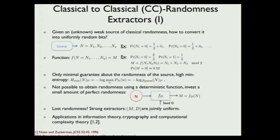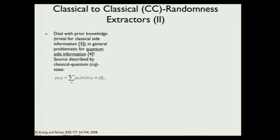From a cryptographic viewpoint, it's an interesting question how to deal with prior knowledge. Imagine a second party has some knowledge about our source — does this randomness extractor still work relative to that party? For classical side information this is no problem at all, but for quantum side information it's not clear. Gawinski et al. give an explicit example of a classical extractor which fails when quantum side information is taken into account. The mathematical model describes the source as a classical-quantum state: the first part is classical (a probability distribution), and the second part is quantum (density operators on a finite-dimensional Hilbert space).